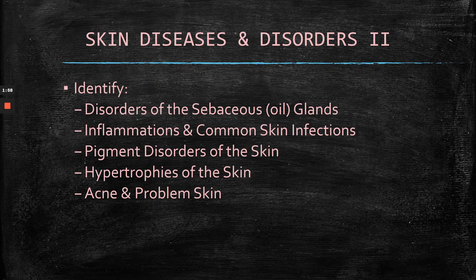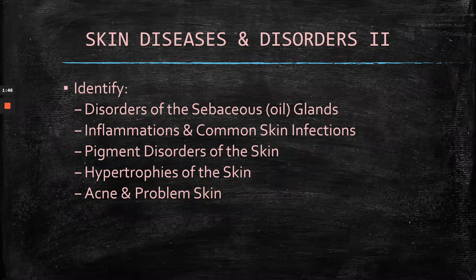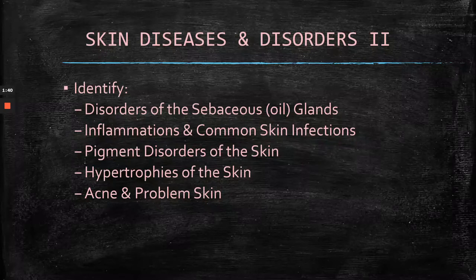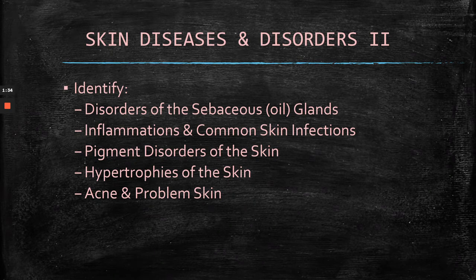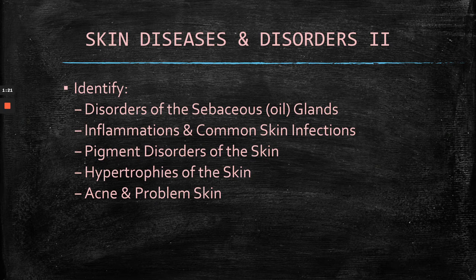Continuing with skin diseases and disorders, identify the disorders of the sebaceous glands: terms like milia, acne, rosacea, the technical term for blackheads, whiteheads, inflammations, and common skin infections — such as conjunctivitis, dermatitis, and eczema — pigment disorders of the skin including albinism, leucoderma, and vitiligo, hypertrophies of the skin like keratoma and mole, and also acne and problem skin. Make sure you make a list of the glossary terms and definitions.